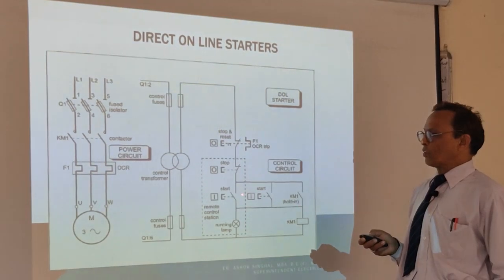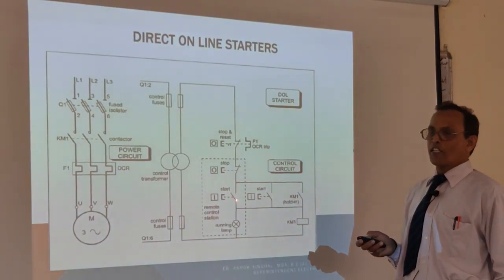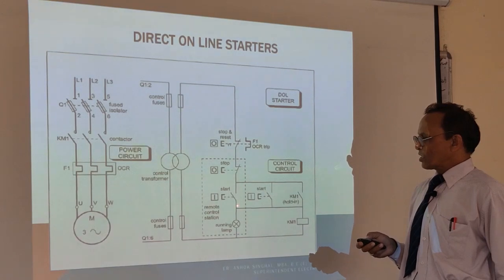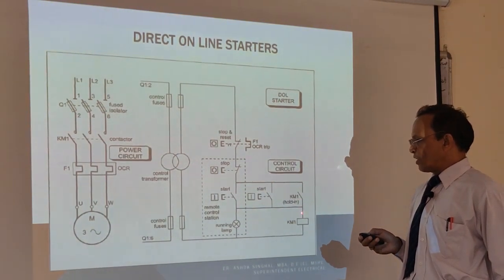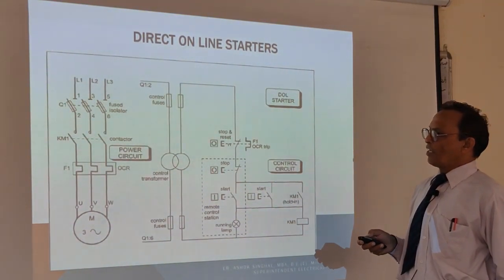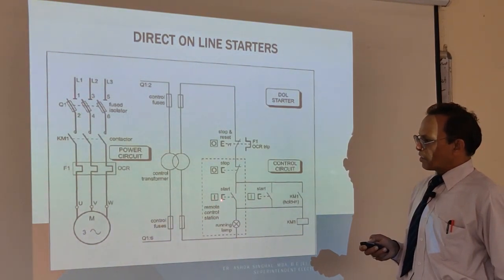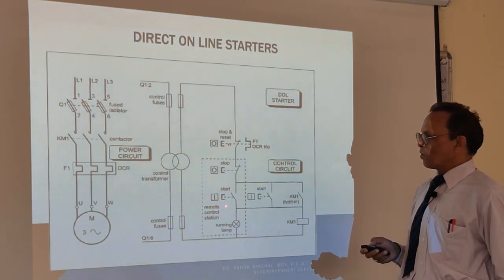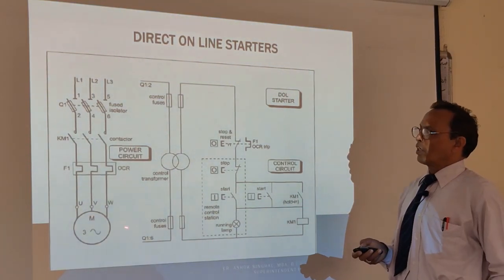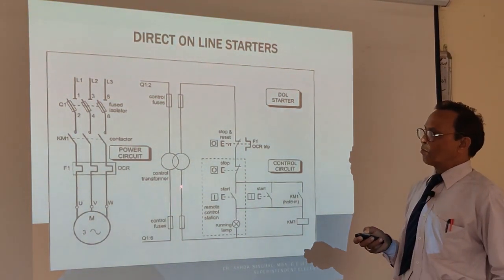At the same time, the holding-on contact is made. The holding contact is a retaining contact. So the moment you release the start push button, power will flow through the holding contact instead — the circuit remains complete and your motor keeps running. So this is the remote start. You can press either one of the remote start buttons and your motor will start running and keep on working.